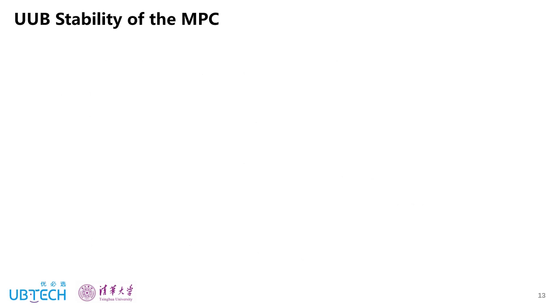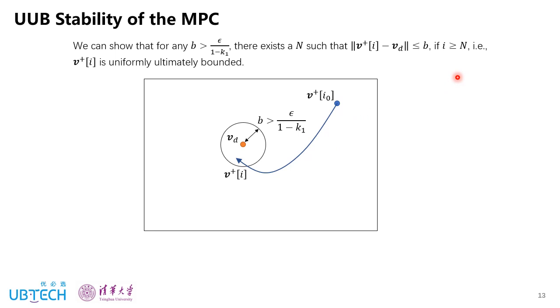So with these three steps, we can theoretically prove that the generated gate of our gate synthesizer satisfies the stability constraints of the MPC problem. The detailed proof is in the paper. Here I briefly introduce the UUB stability of the MPC. So if the stability constraints are satisfied, we can show that for any boundary that is larger than epsilon over 1 minus k1, there exists N such that if i is larger than N, then V plus will go inside this bound, which means V plus is uniformly ultimately bounded. And since we also have this condition in the stability constraints, P plus is also uniformly ultimately bounded. Thus, our MPC problem can ensure the UUB stability of both the COM position and velocity.